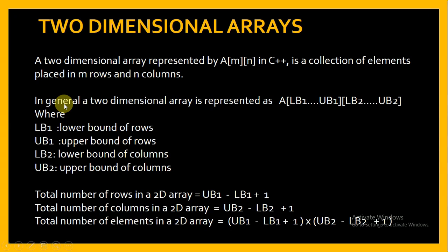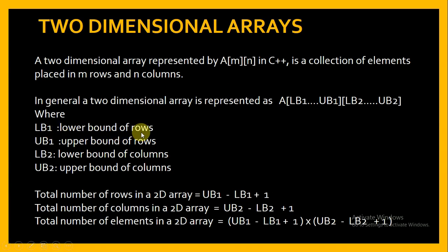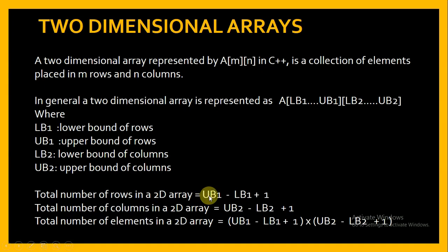In general, a 2D array is represented as A[LB1 to UB1][LB2 to UB2] where LB1 is the lower bound of rows, UB1 is the upper bound of rows, LB2 is the lower bound of columns and UB2 is the upper bound of columns. So the total number of rows in a 2D array is UB1 minus LB1 plus 1 and total number of columns is UB2 minus LB2 plus 1.